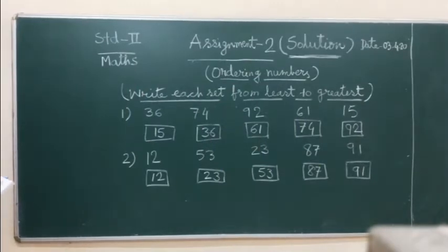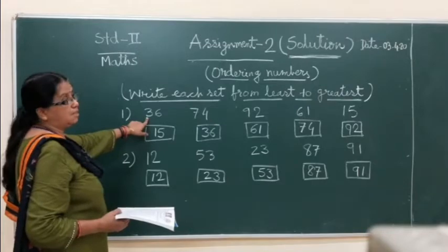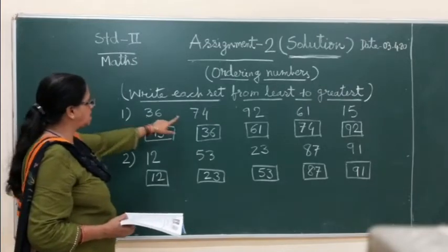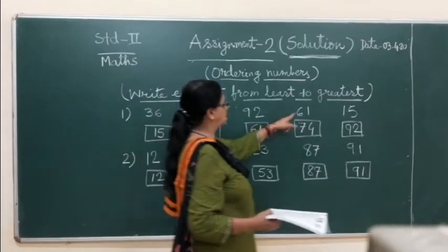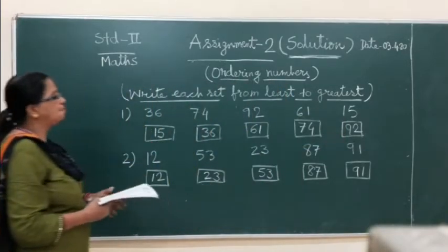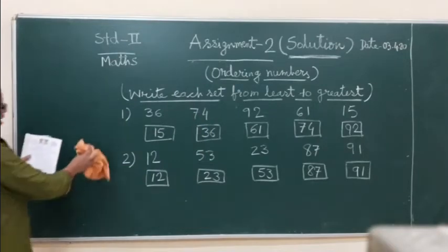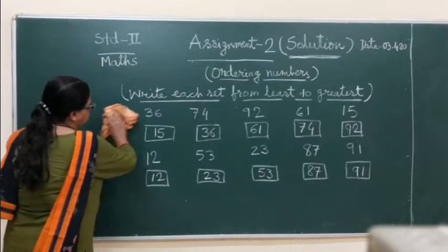Very easy, you have to only see the first number. This is 3 smallest, this is 7, 9, 6, 1. The one is smaller, so you can solve this way. Same way you can solve the next portion also.